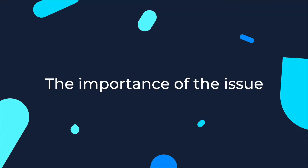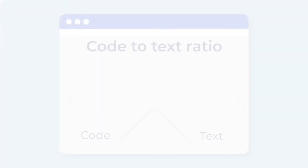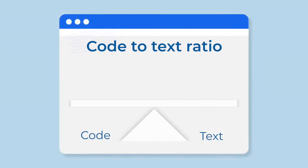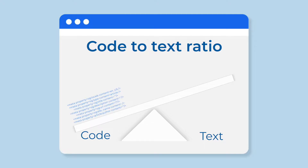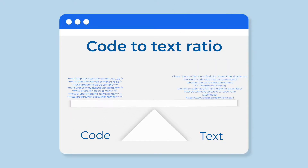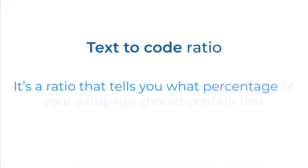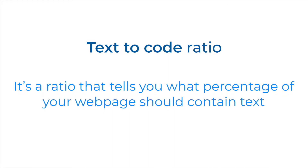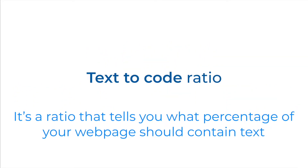Why is it so important? You've likely heard the claim that you want to have a healthy code-to-text ratio when it comes to displaying content, typically text on a web page. It's a ratio that tells you what percentage of your web page should contain text.